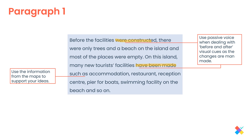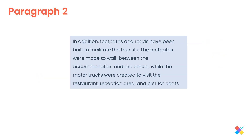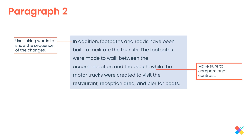Nothing too complicated so far. Moving on to the second body paragraph, where we bring more details. This is signposted by the linking word 'in addition,' which sequences the changes. Then more details follow. We also have a comparison using 'while.' So 'the footpaths were made' — passive — 'were created' — again passive. And we have a comparison between the motor tracks, or roads, and the footpaths.